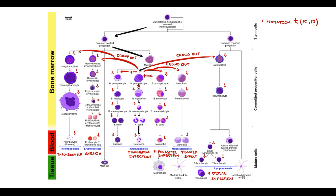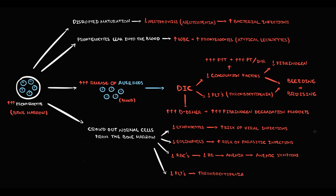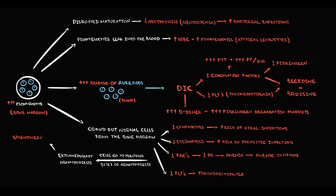When promyelocytes crowd out normal cells from the bone marrow, those cells must find shelter elsewhere. They return to previous sites of hematopoiesis — spleen, lymph nodes, and liver. Invasion of the bone marrow by promyelocytes forces normal cells to leave and seek their prior hematopoietic sites. Initially this occurs in splenic tissue, causing splenomegaly as cell numbers increase there. It also occurs in lymph nodes, causing lymphadenopathy, and in liver tissue, causing hepatomegaly.